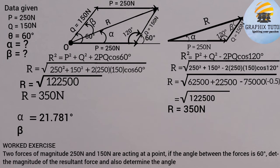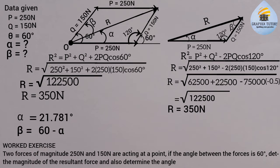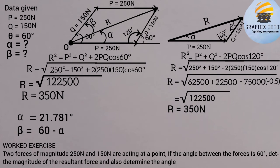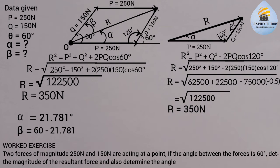To find beta, we use the relationship beta = theta minus alpha. Looking at the diagram, the resultant force lies between the two forces and the angle theta is 60 degrees. Since alpha = 21.781 degrees, beta = 60 minus 21.781 = 38.219 degrees.